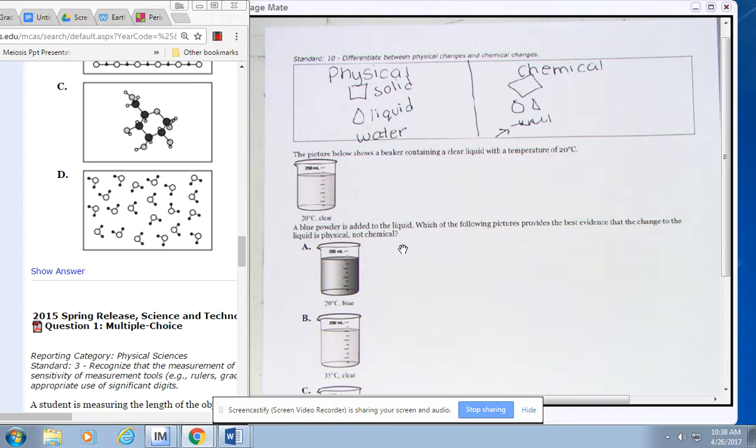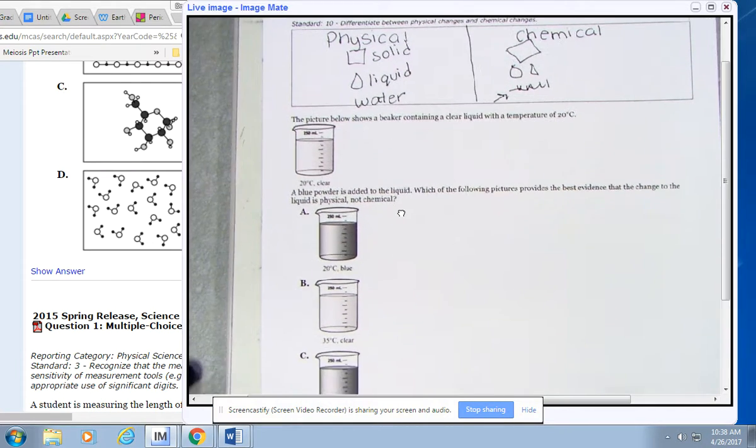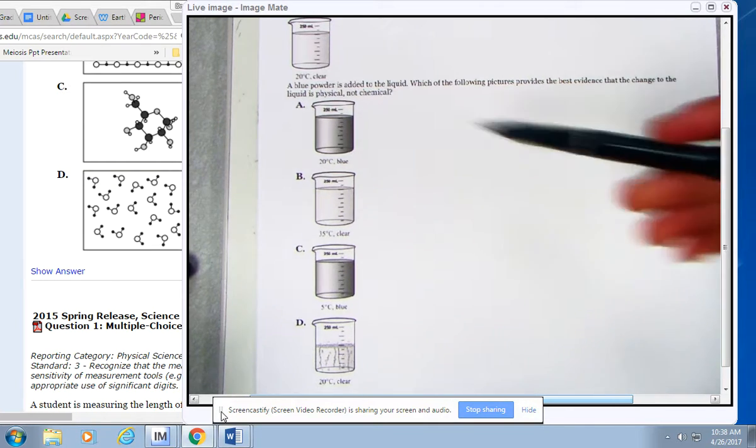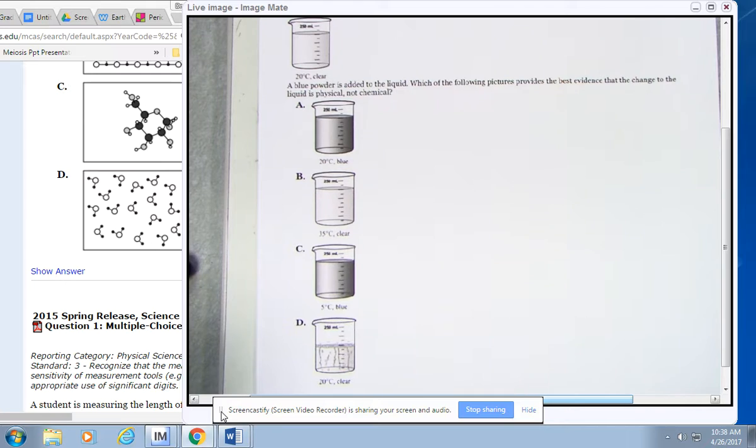So what would happen if you added a blue powder to a clear liquid? Which one shows a physical change? If it's 20 degrees Celsius. Because you're not doing anything. The water is just turning blue. The color is just turning blue.